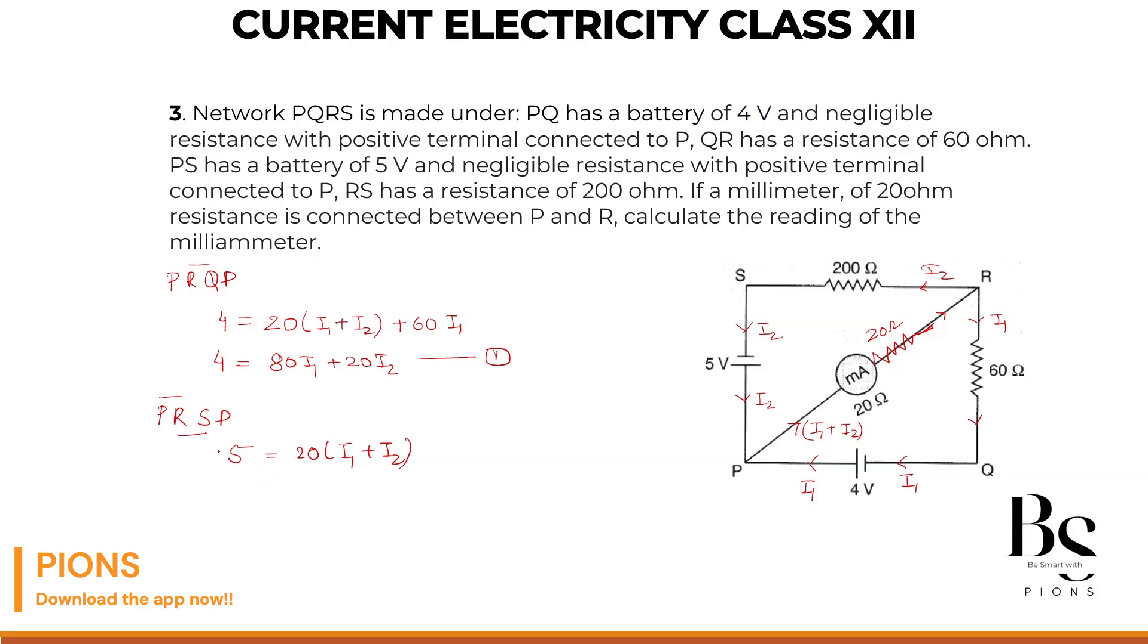Now I am going from R to S and current is also going from R to S. 200 into I2. And S to P, no resistance. Battery we already considered. So this is our second equation. Let's simplify it. 20 I1, 20 and that 220 I2. Equation number 2.